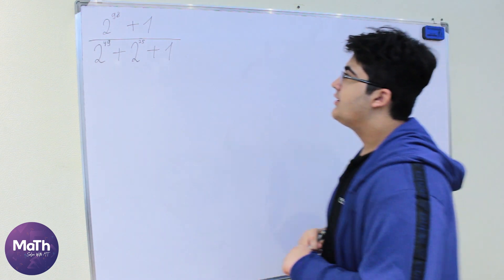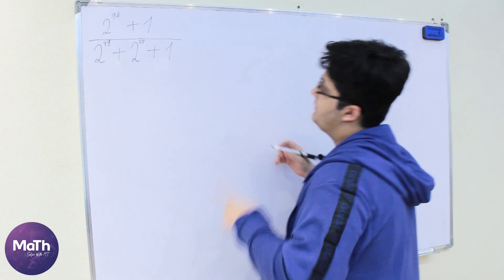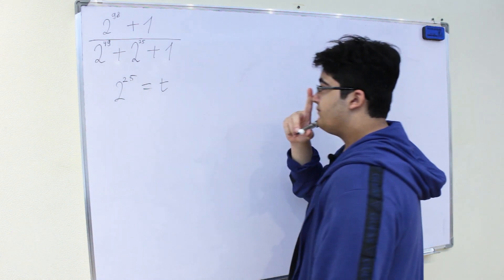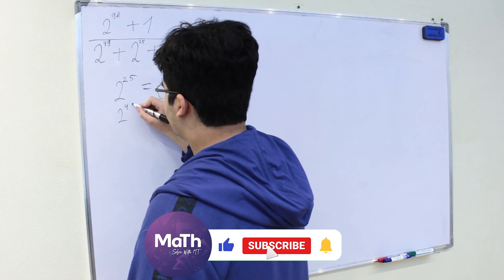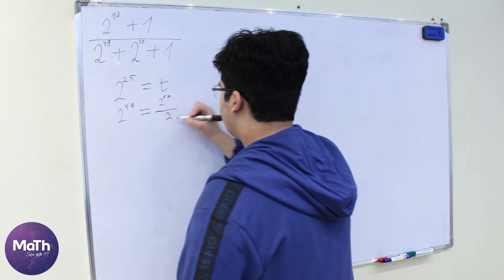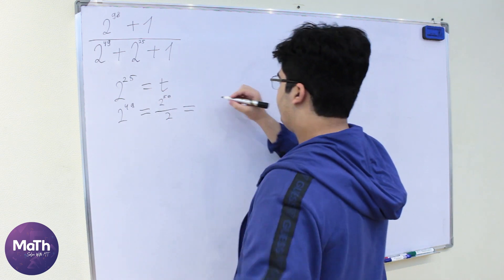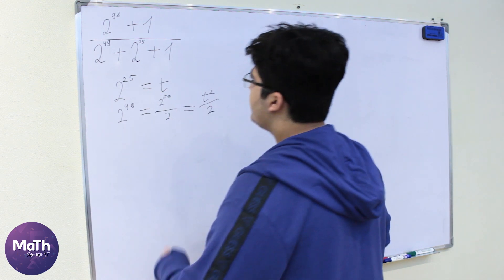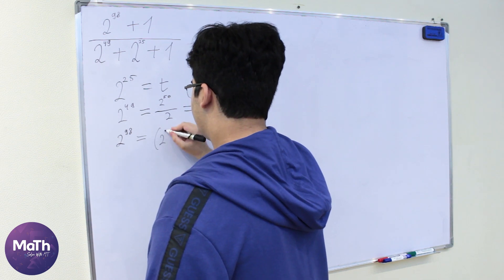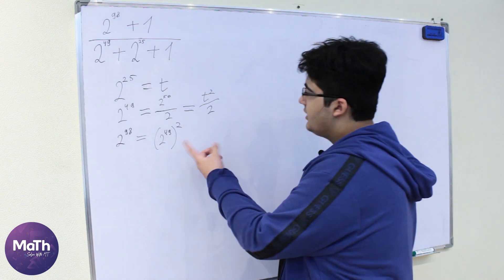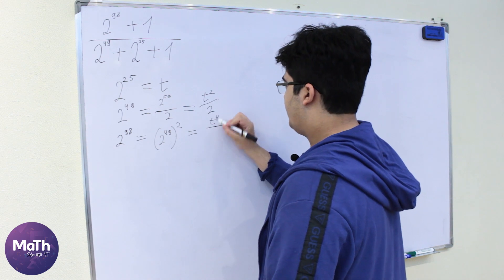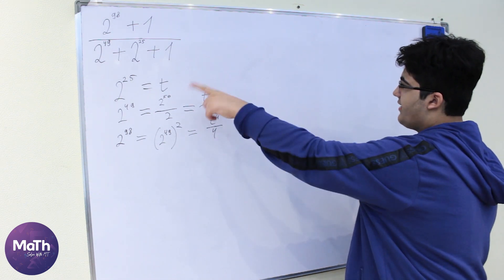The first thing we're going to do here is let t equal 2 to the power of 25. Then 2 to the power of 49 is 2 to the power of 50 divided by 2, so this will be t squared divided by 2. And 2 to the power of 98 is 2 to the power of 49 squared, so this will be t to the power of 4 divided by 4.